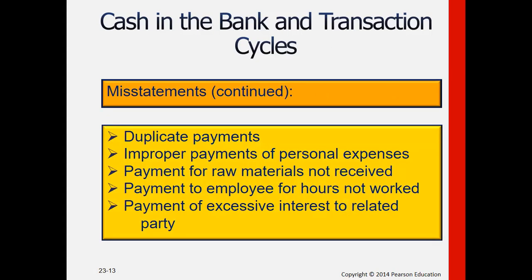Other misstatements include duplicate payments, whether intentional or unintentional. Personal expenses that should not be mixed with business are paid from the company's funds. Payments are also made for raw materials not actually received, hours not worked, and excessive interest paid to related parties — all resulting in overstatement of expenses.